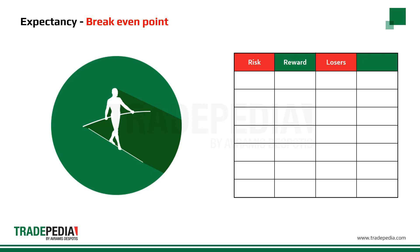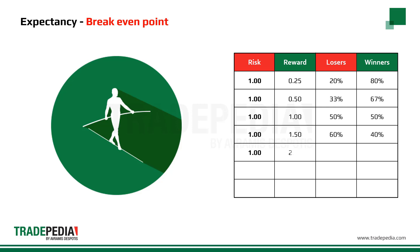For example, using a risk-to-reward ratio of 1 to 0.25 would imply that we need 80% accuracy to be at the breakeven level — that is, to have an expectancy of zero. A risk-to-reward ratio of 1 to 1.5 would require 40% accuracy to be at the breakeven level. A risk-to-reward ratio of 1 to 4 would require only 20% accuracy to be at the breakeven level.